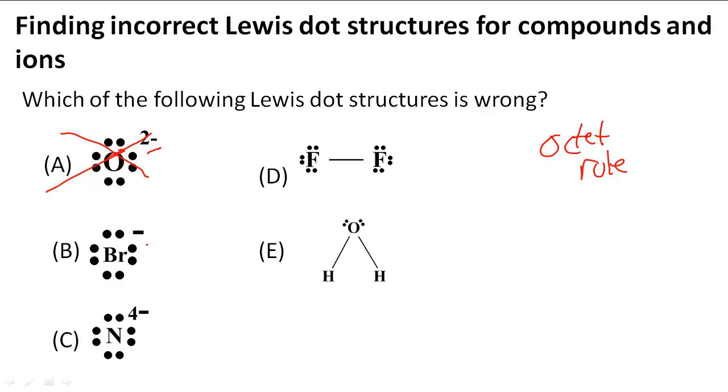Bromine has seven valence electrons because it's in group 7A. When we look at it, we see it has gained one valence electron to have eight total. So that is also correct. B is not the answer we're looking for.